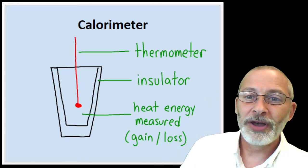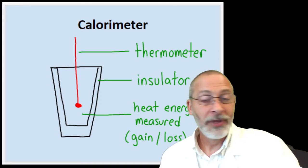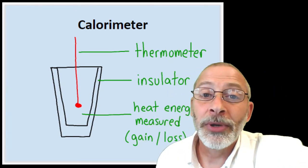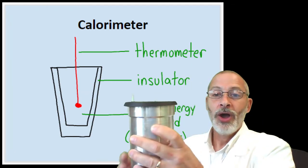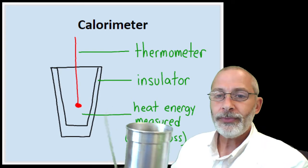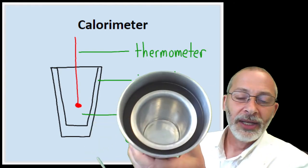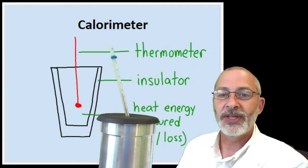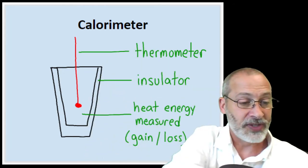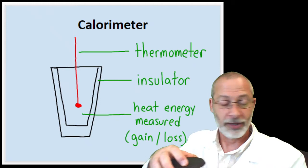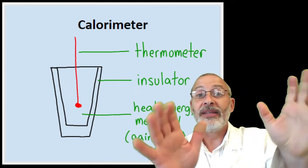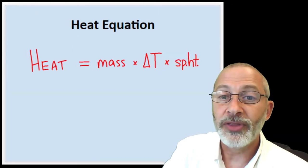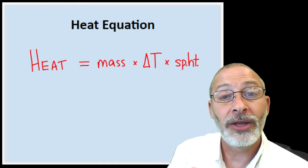The calorimeters we'll be using tomorrow in the lab actually look like an insulated aluminum cup inside a larger insulated aluminum cup, inside of which we'll be placing a thermometer. We're going to be placing something inside that inner aluminum cup in addition to water, but we'll get to that when we get to the lab activity. Hopefully you've got the diagram labeled.